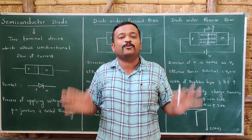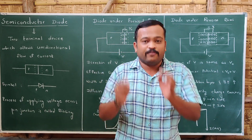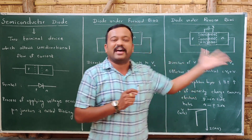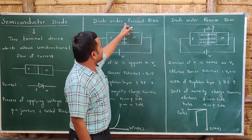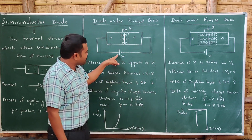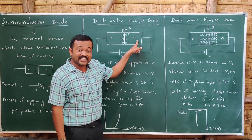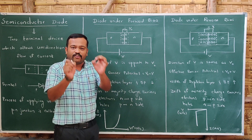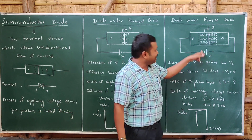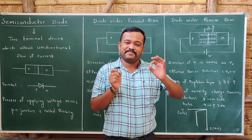The process of applying voltage to the PN junction is called biasing, and biasing is of two types: forward bias and reverse bias. When the positive terminal of a battery is connected to the P side and the negative terminal is connected to the N side, the diode is said to be forward biased. When the positive terminal is connected to the N side and the negative terminal is connected to the P side, the diode is said to be reverse biased.